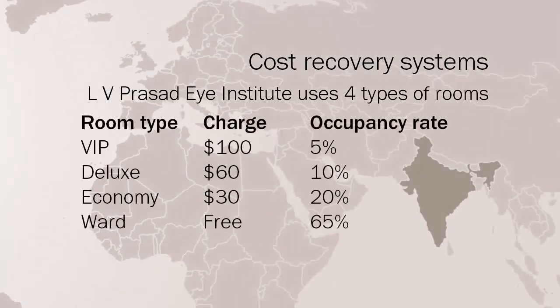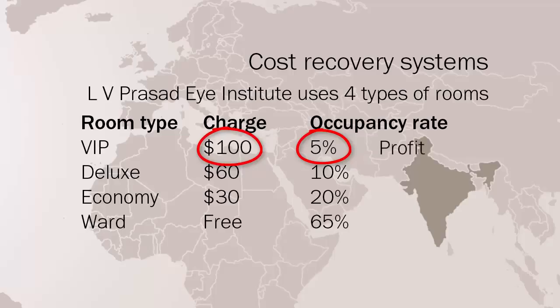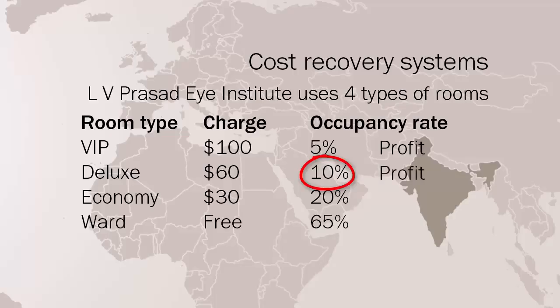Cost recovery systems can be put in place to recoup fixed costs and reduce the cost that is passed on to patients in the price they have to pay for surgery. It is important that clinical standards are not compromised or outcomes affected by cost recovery. However, non-clinical facilities can be varied. For example, the type of room a patient pays for can help subsidise free patients.